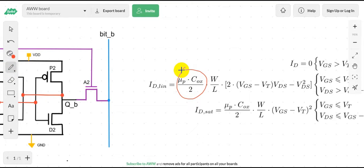μₙ·Cₒₓ is constant in your transistor. We don't want to play with the supply voltage because this will affect the whole circuit. Also, the gate voltage is fixed and coming from the Q̄ node. The length of technology is fixed for a design, so the only thing remaining is width.